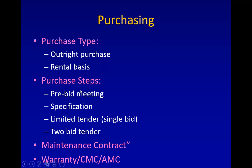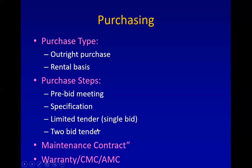The steps of purchasing start with a pre-bid meeting, which is important for high-end equipment. You meet with prospective suppliers and various manufacturers to decide the specifications based on your need. You may then buy the equipment by a limited tender, single bid, or two-bid method. In the two-bid method, there is a technical bid and a financial bid. There is also a maintenance contract, which may be either warranty, CMC, or AMC.